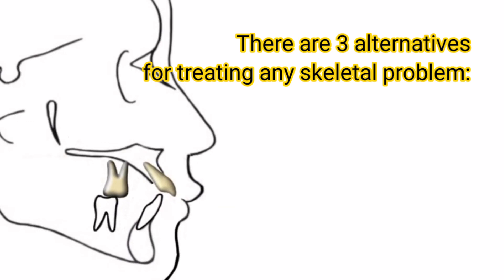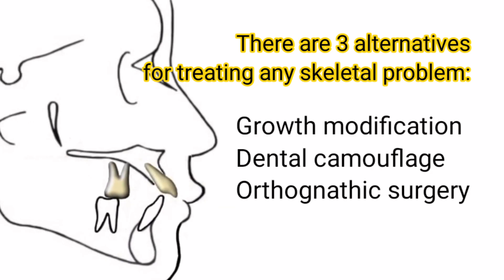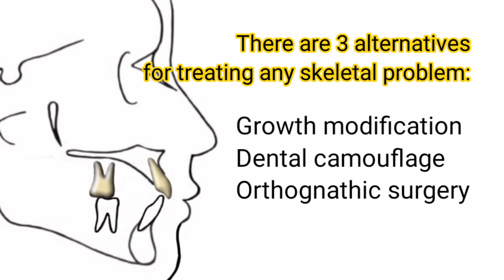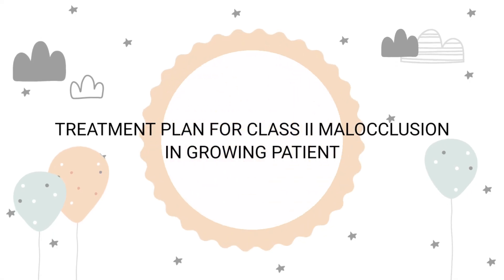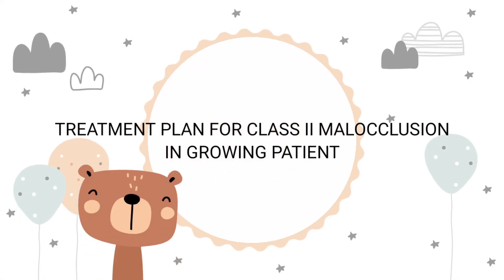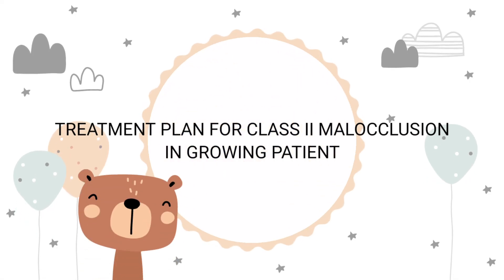Treatment Approaches for Skeletal Class II Occlusion: There are three alternatives for treating skeletal problems — Growth Modification, Dental Camouflage, and Orthognathic Surgery.